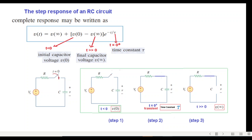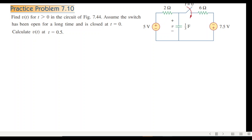So with this knowledge, let's solve the problem. This is the circuit given here. We have to find v(t) for t greater than zero, and also calculate v(t) at t equals 0.5. Step number one: for t less than zero we have to find v(0).